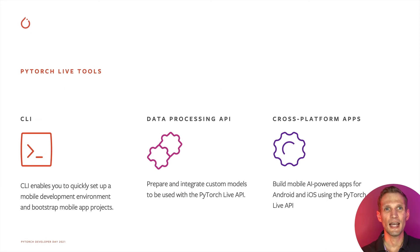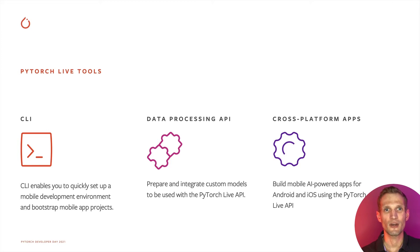Here are three highlights of PyTorch Life. First, a command-line interface which quickly sets up a mobile app development environment and bootstraps mobile app projects. Second, a data processing API which prepares and integrates custom models to be used with PyTorch Life. Third, a cross-platform API which builds mobile AI-powered apps for Android and iOS. For example, if you want to showcase a mobile app model that runs on Android and iOS, with PyTorch Life it cuts the cost in half and you don't need to have Android and iOS developer experience.